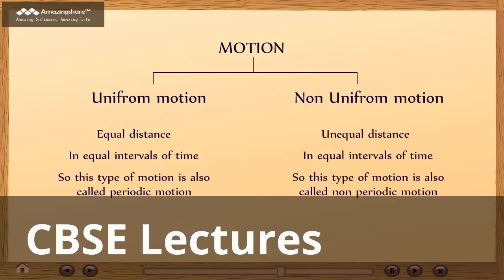Non-uniform motion: when an object covers unequal distance in equal interval of time. So this type of motion is also called non-periodic motion.